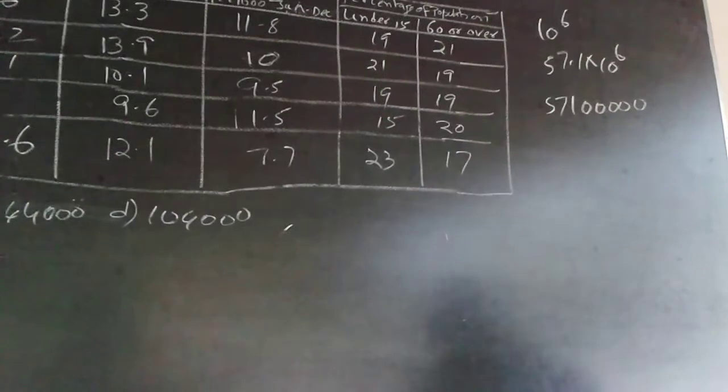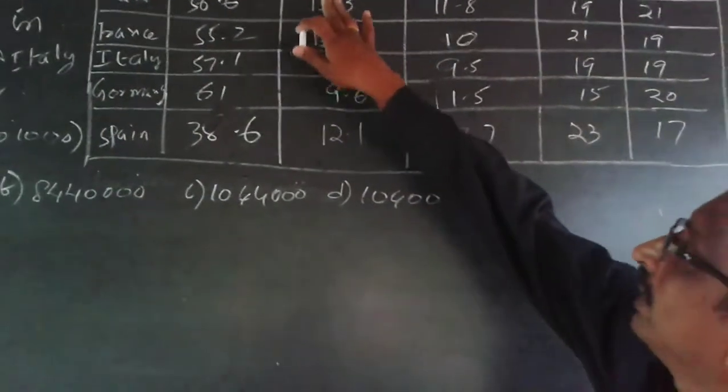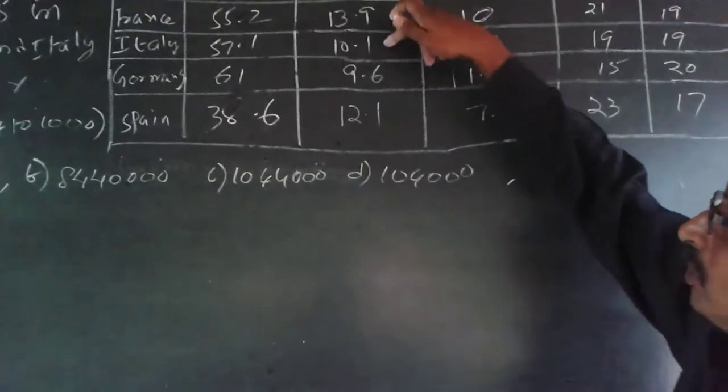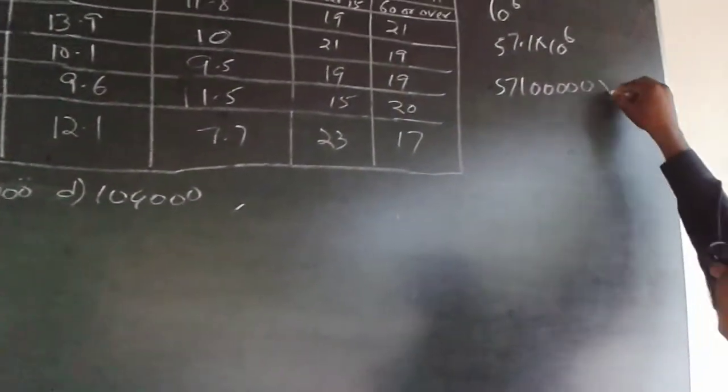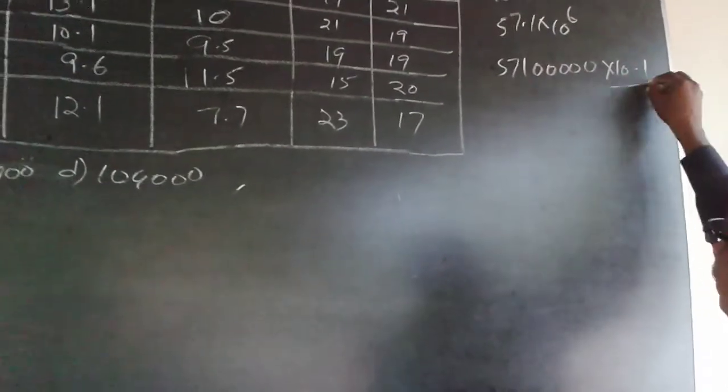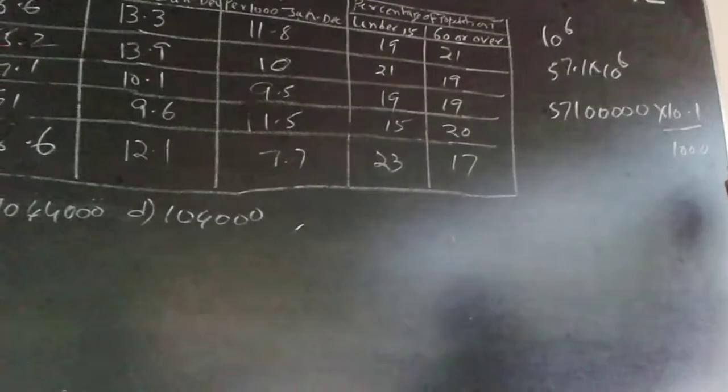The live births for Italy is given as 10.1 per thousand. For every thousand it will be 10.1, so I have to multiply by 10.1 divided by thousand. The three zeros will cancel, similarly for this decimal one zero will cancel, so actually it will be 5710 × 101.